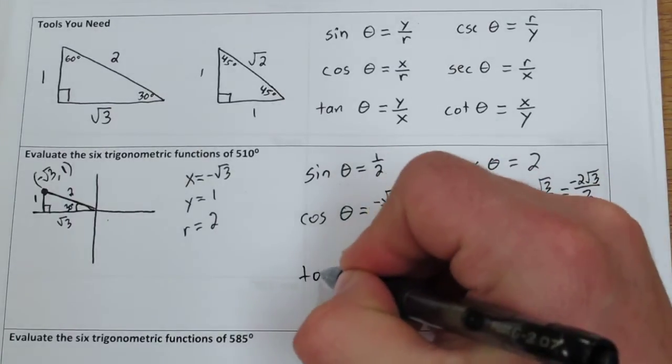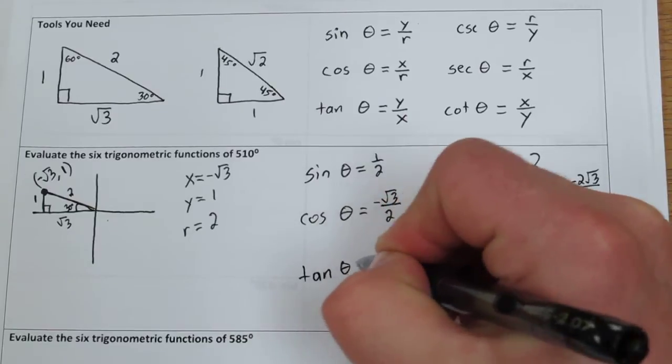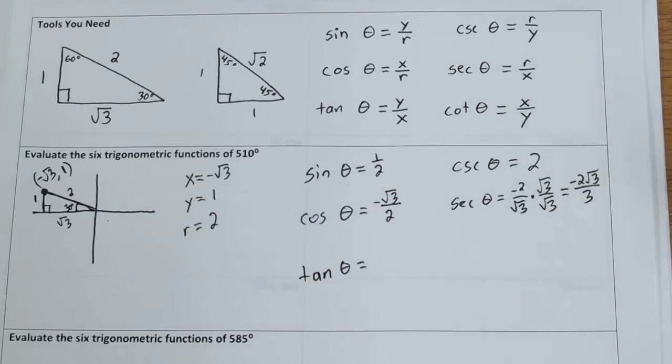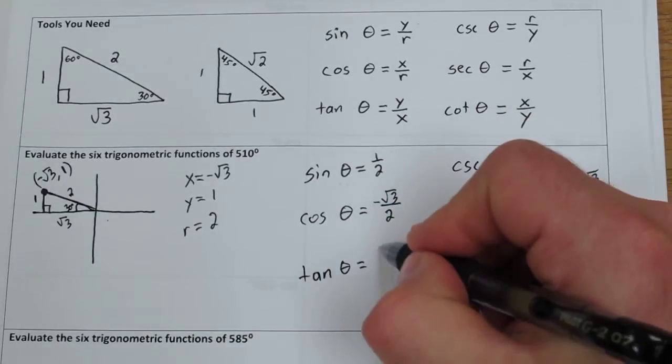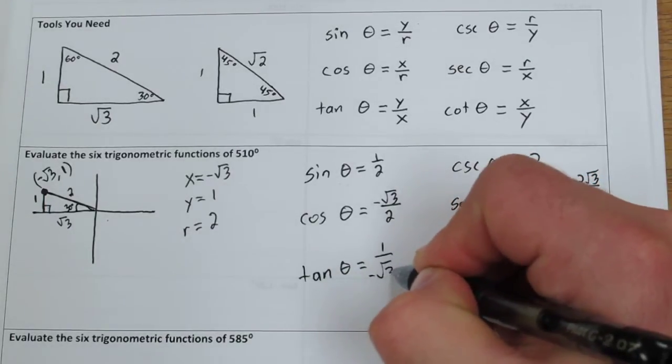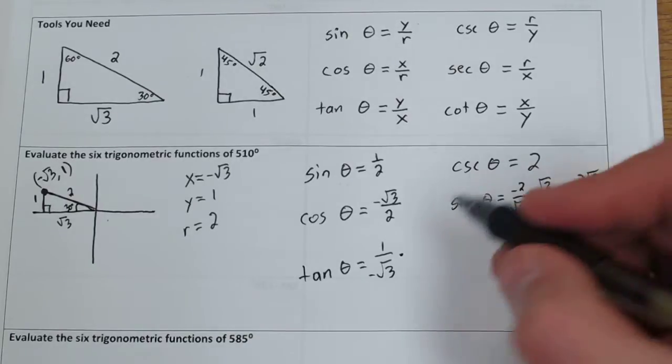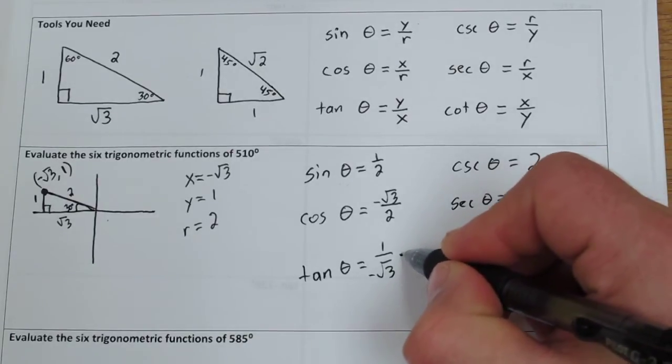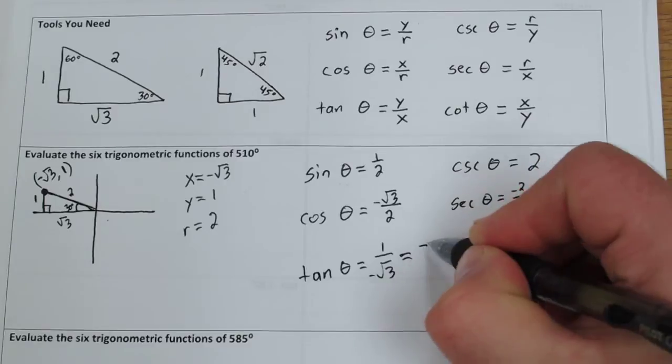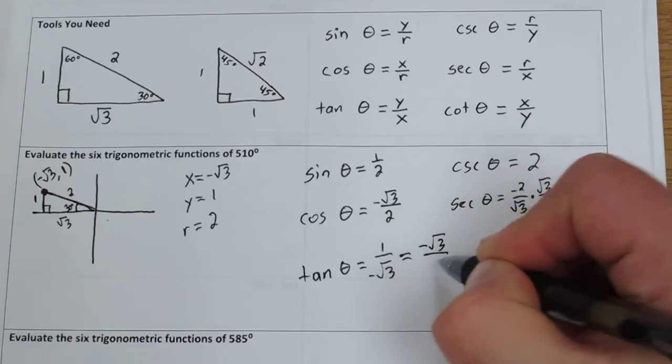Then tangent theta is y over x, so that's 1 over negative rad 3. We need to rationalize this one too. If we multiply it by rad 3 over rad 3, we end up with negative rad 3 over 3.